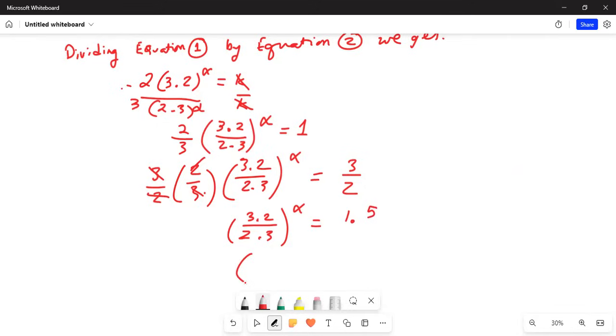Inside the parenthesis, we use our calculator and divide 3.2 by 2.3 and the answer is 1.391. So it's 1.391 exponent alpha equals 1.5.